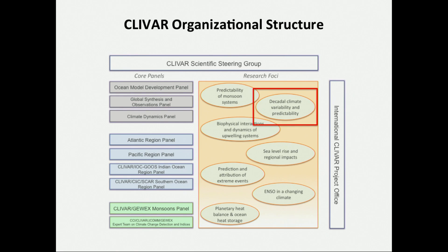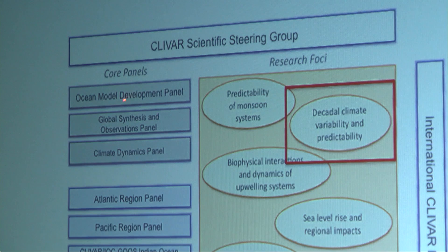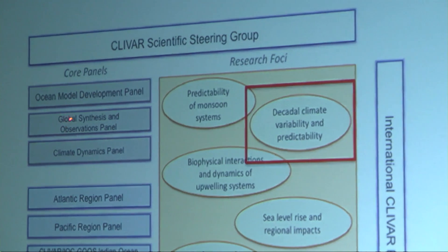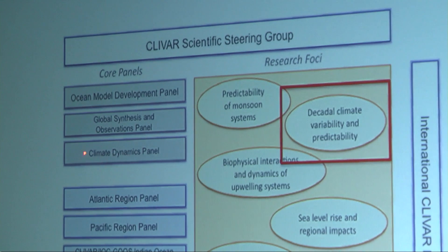If we look at the new organizational structure of CLIVAR, you can see here two columns. One column is the core panels of CLIVAR and the other one is called research foresight. The idea behind this relatively new structure is that there are different core panels that deal with either specific tasks, like ocean model development, global synthesis and observation panel — mostly of the ocean.